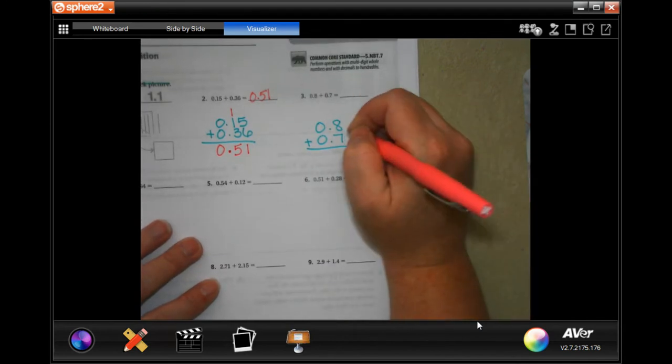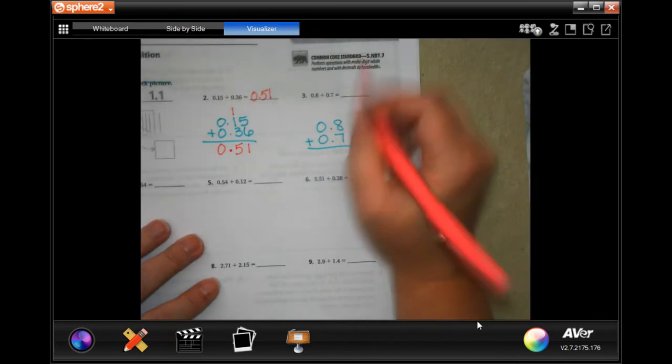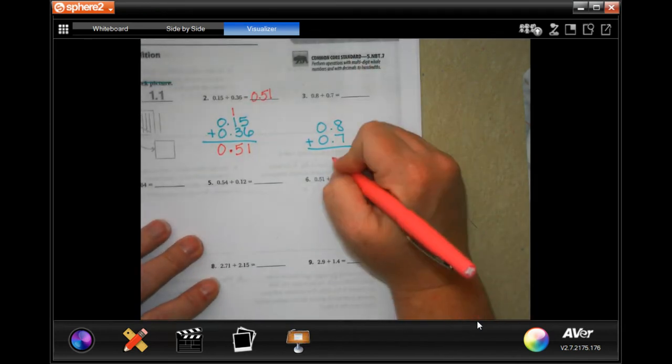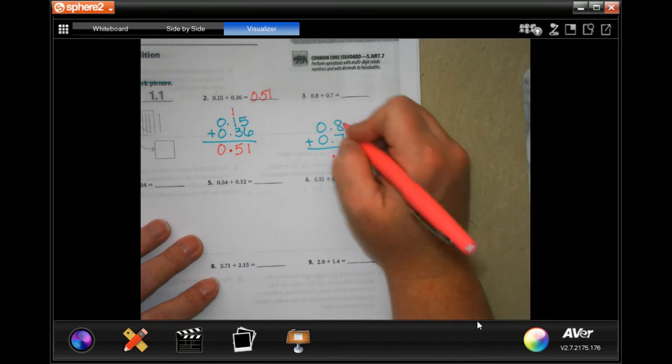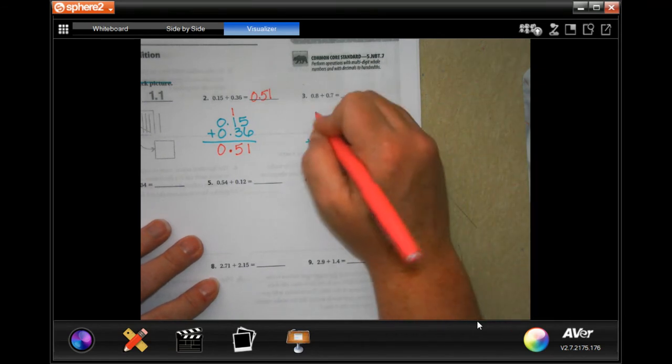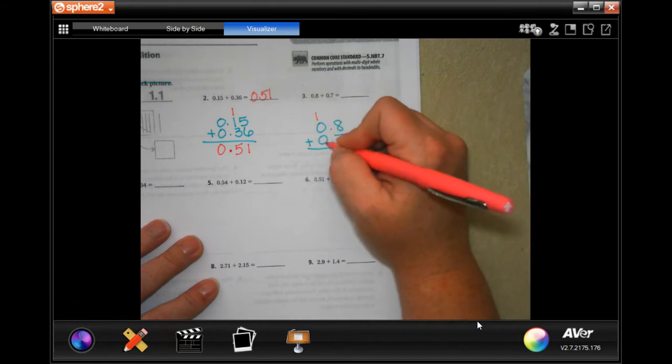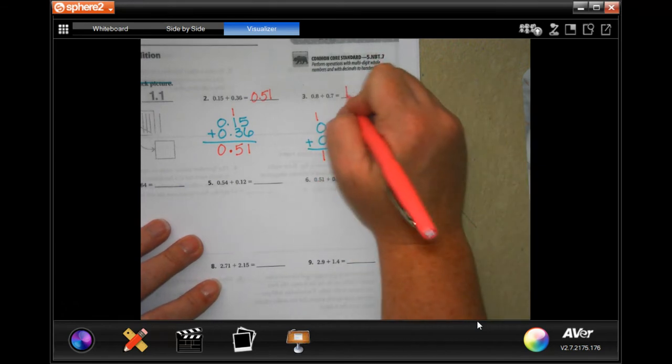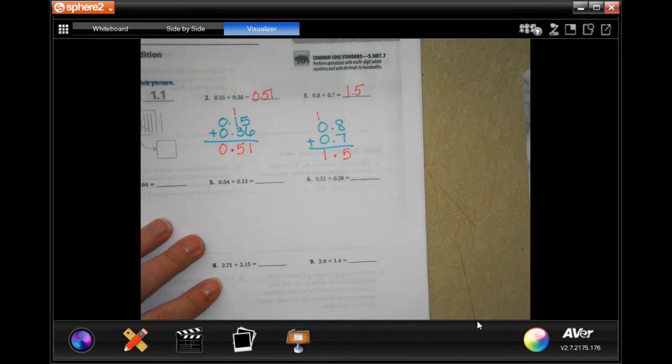Now, first step, lined up my decimal. Second step, bring my decimal down. Eight plus seven is fifteen. Carry the one. One plus zero plus zero is one. One point five. Done.